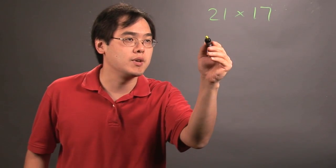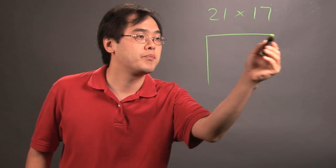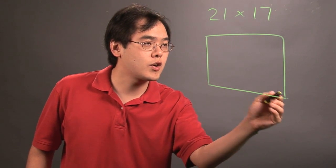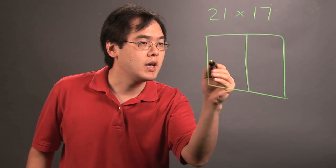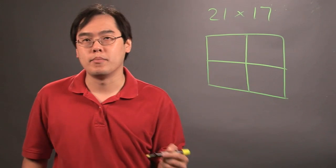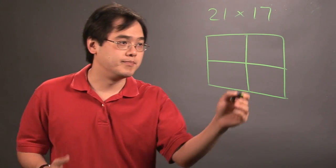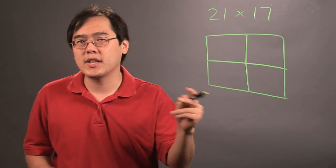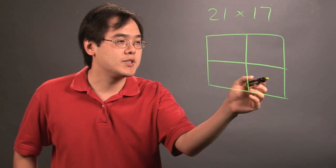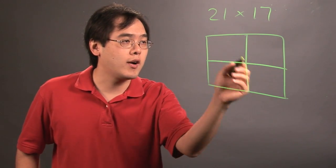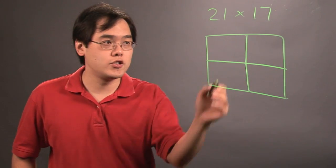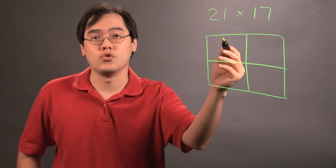So first of all, what you want to do is, because you have a two-digit times a two-digit number, you want to create a two-by-two, you can think of it as kind of like a matrix-type shape, but it's basically a square with four squares in there, two columns and two rows.